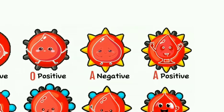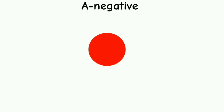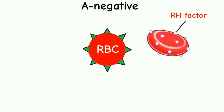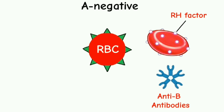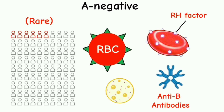A negative. Blood group A negative is characterized by the presence of A antigens on the surface of red blood cells and the absence of the RH factor. This type also contains anti-B antibodies in the plasma. Globally, A negative blood type is relatively rare with only 6% of the population having this blood type.